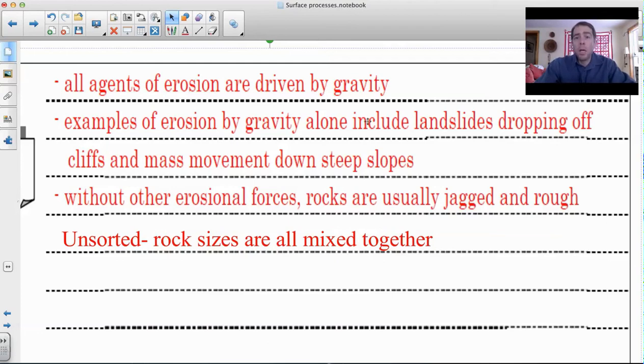Examples of erosion by gravity alone include landslides, rocks falling off cliffs, and mass movements where things are falling down steep slopes without other erosional forces like water or wind. Rocks that are moved by gravity will usually end up being jagged and rough. If a rock breaks and falls down a cliff, it's going to have rough edges, not smooth like when water rolls over it.